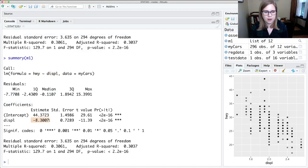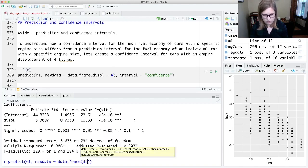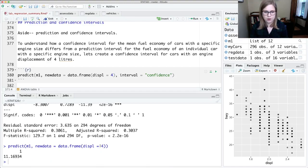I've got an estimate for my slope and I could do predictions on that model if I wanted to. So I could just predict on m1, new data is equal to a data.frame where the displacement is equal to four. So if a car had an engine displacement of four liters I would predict that the fuel economy would be 11.17.